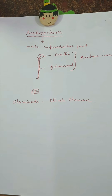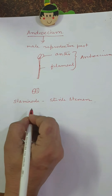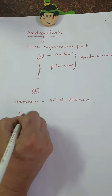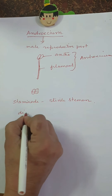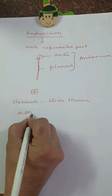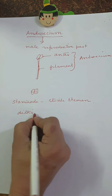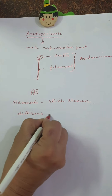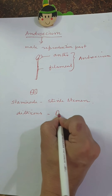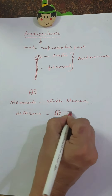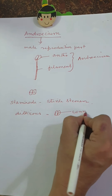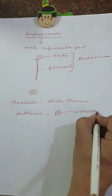Most anthers are bi-lobed, which is known as dithecous. 'Di' means two, so dithecous means two-lobed. The anther is attached to the filament through a connector.